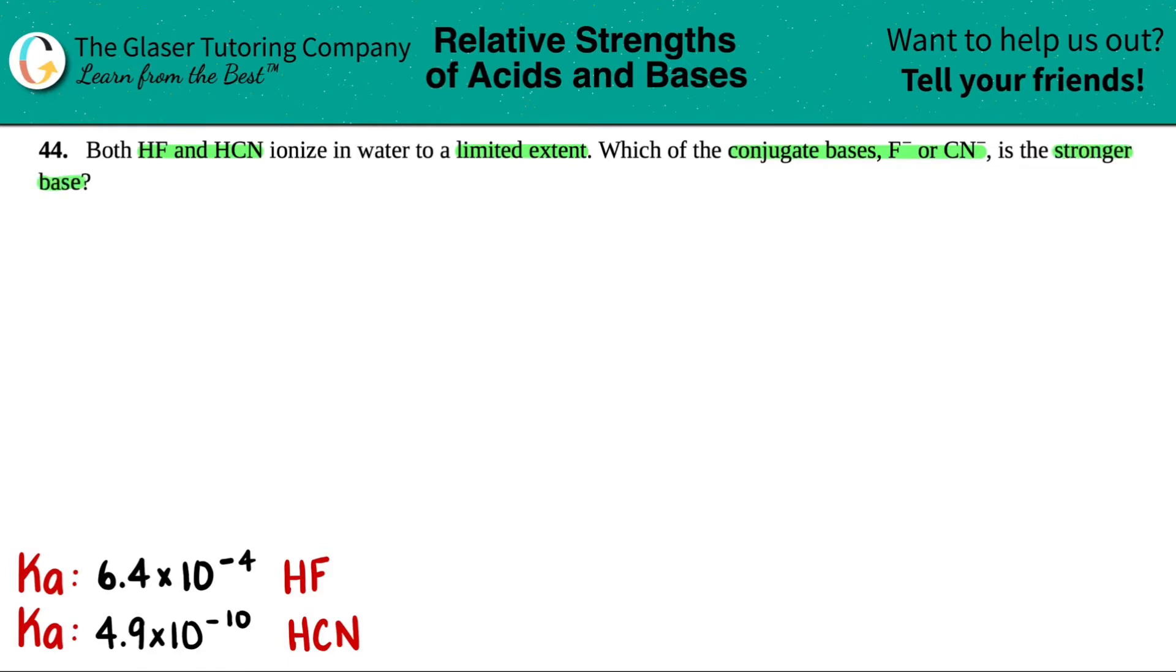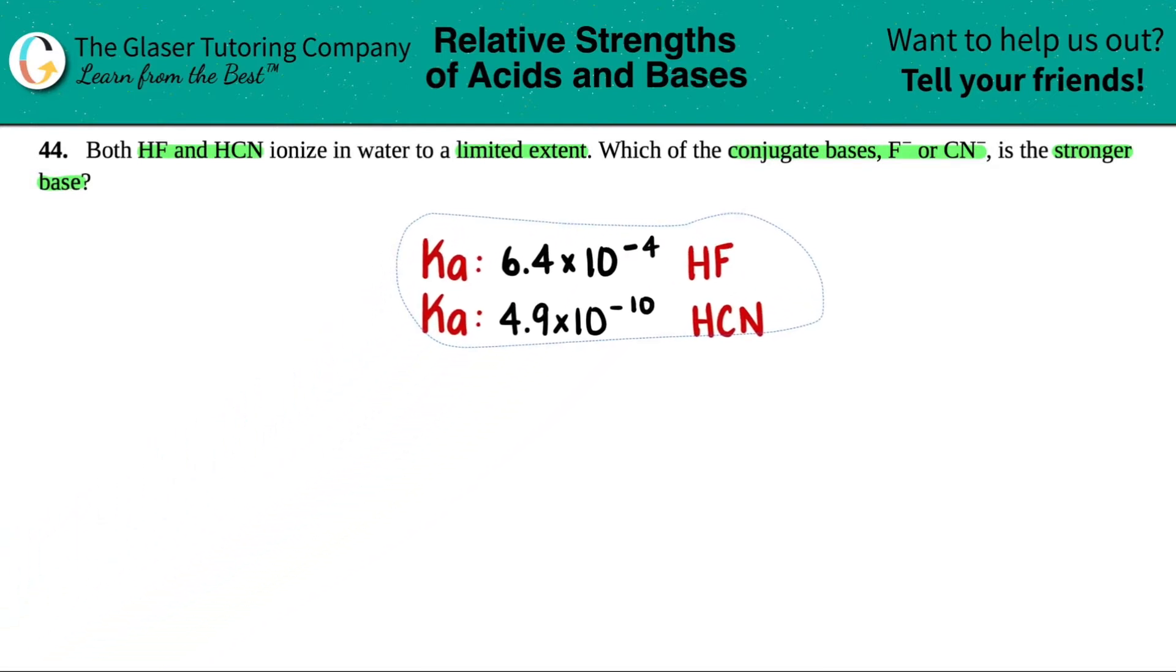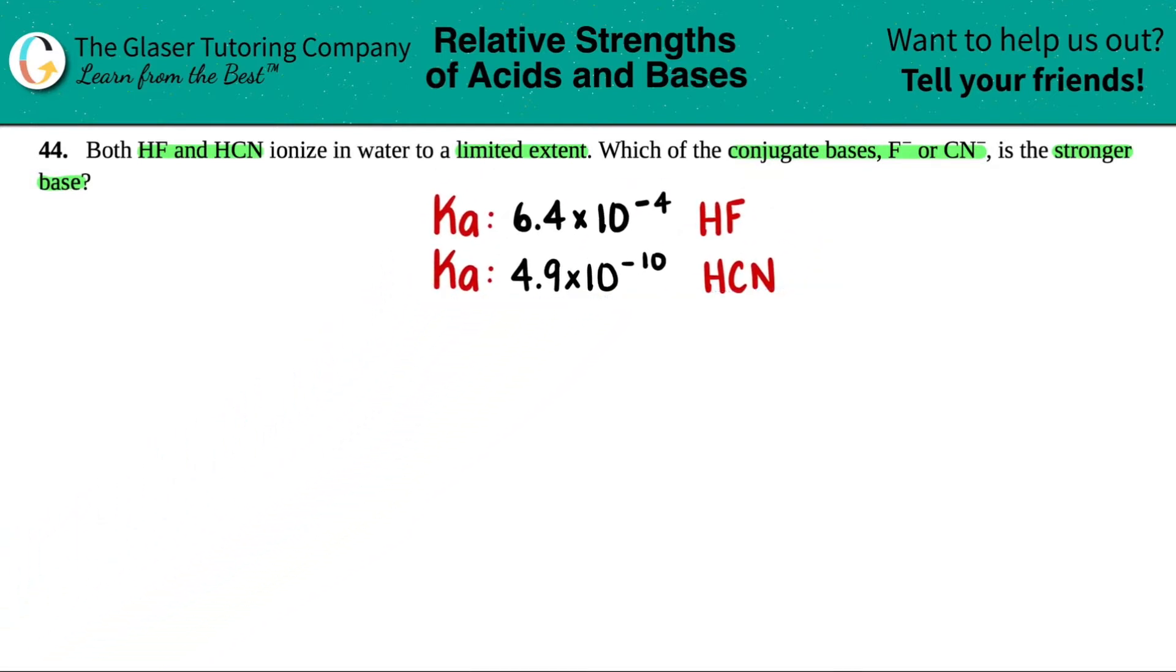Okay, so in order to answer this problem, we have to know the Ka values for both HF and HCN, which I already got for you in the back of a textbook, and that's these guys right here.